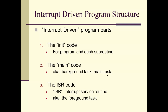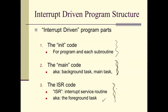Interrupt-driven programs have a couple of standard parts. There's some initialization code — there's a special init code for interrupt-driven programs. Then there's the main code, also called the background task, which is what the code does when it doesn't have an interrupt. When an interrupt occurs and the microcontroller acts on it, it goes to the interrupt service routine — the foreground task. So the ISR is the foreground task and the main code is the background task.